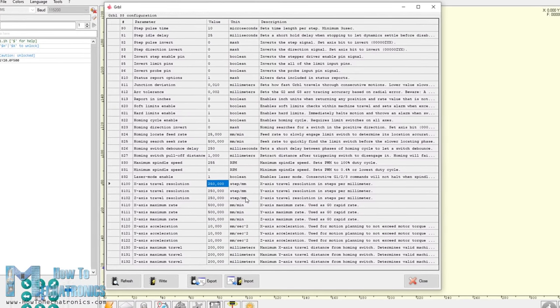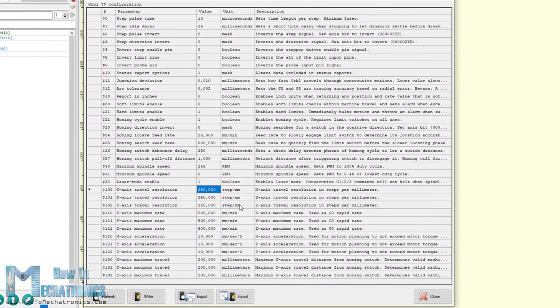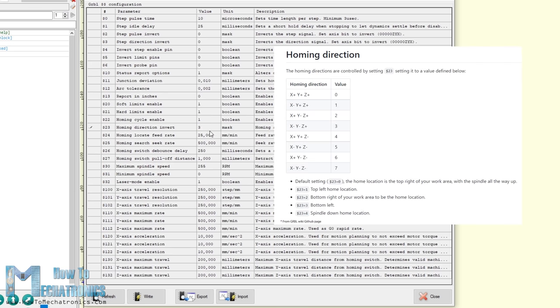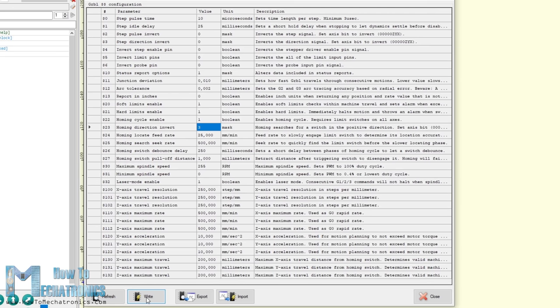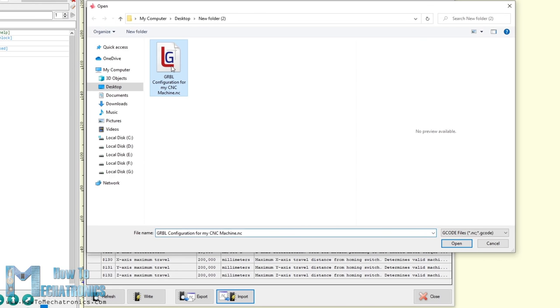Nevertheless there are other important parameters that need to be adjusted as well. For example we should enable the hard limits which are the actual limit switches, soft limits which defines the working area, set the homing direction which defines where our limit switches are located on the machine and so on. You can find more details about all these parameters on the website as well as download my set of parameters so you can just import them into your firmware.